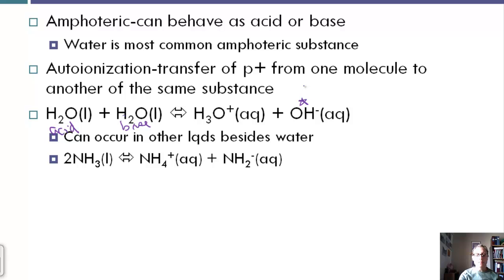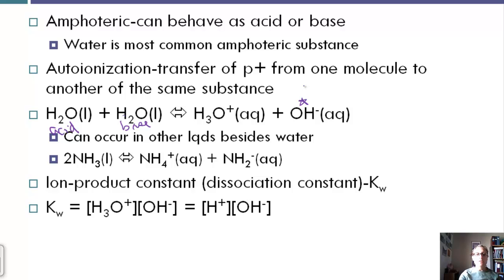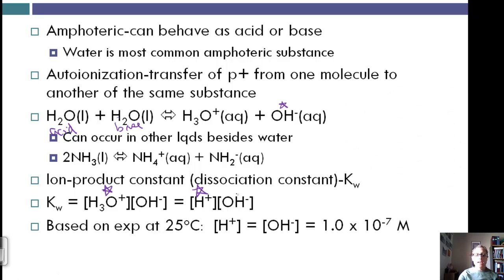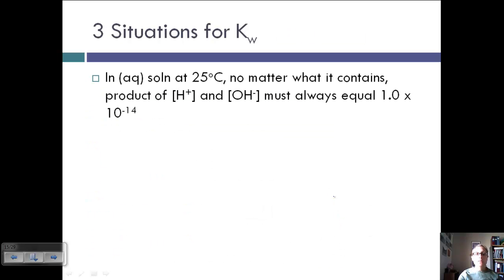Auto-ionization can occur in other liquids besides water as well — for example, ammonia producing the ammonium ion and NH2−. Kw, the ion product constant or dissociation constant, equals [H3O+][OH−], or equivalently [H+][OH−]. Based on experimental evidence at 25°C, [H+] = [OH−] = 1 × 10⁻⁷ M, so Kw = 1 × 10⁻¹⁴. In any aqueous solution at 25°C, no matter what it contains, [H+][OH−] always equals 1 × 10⁻¹⁴.